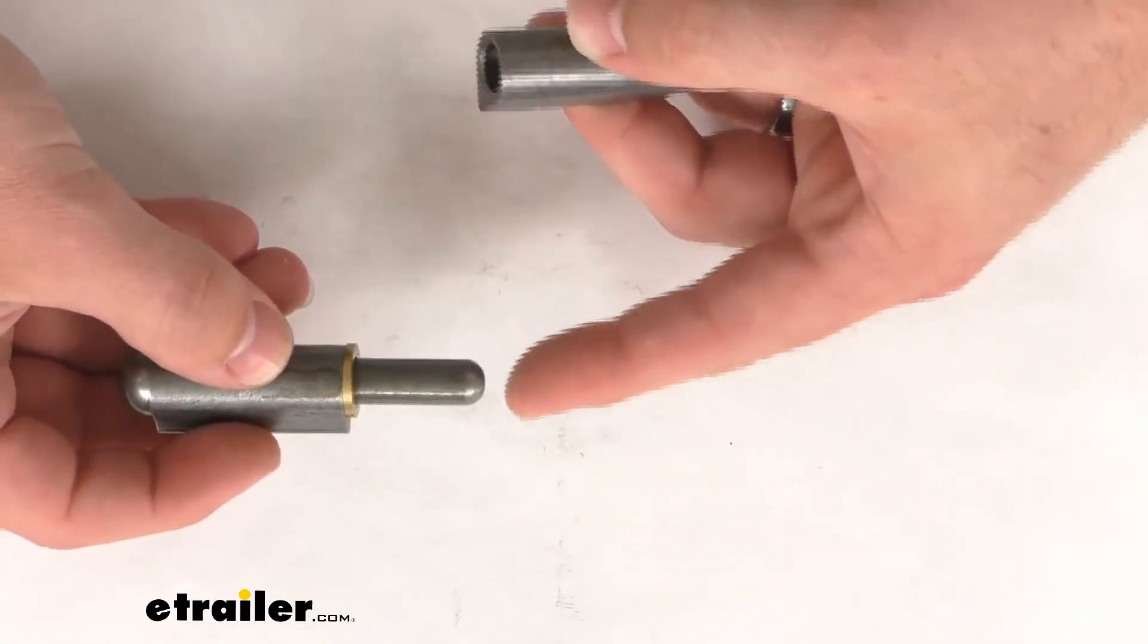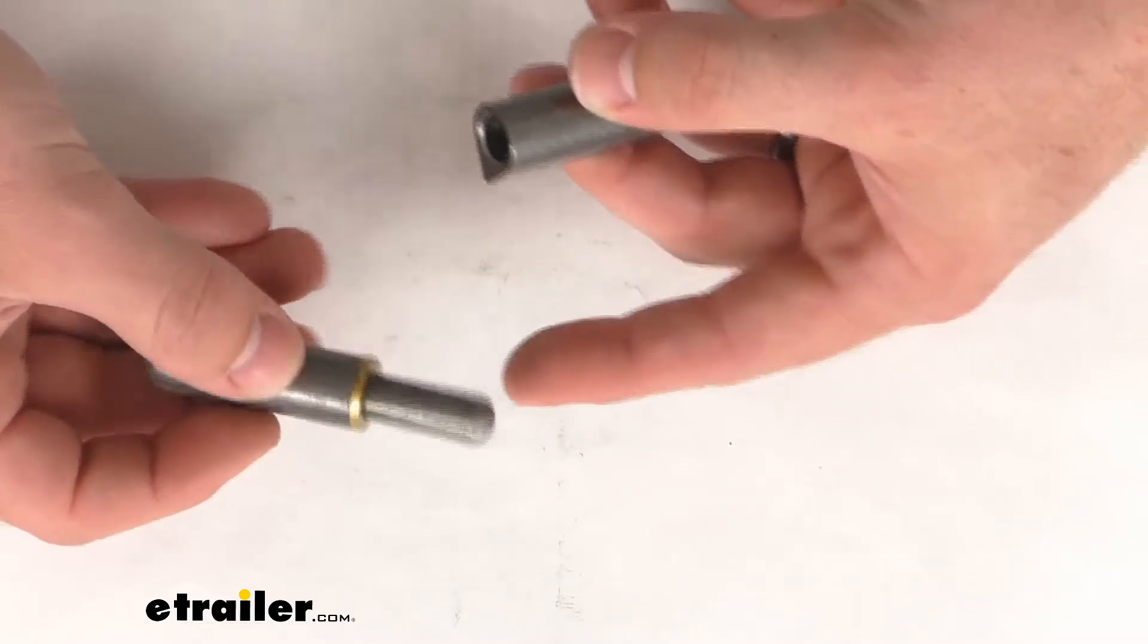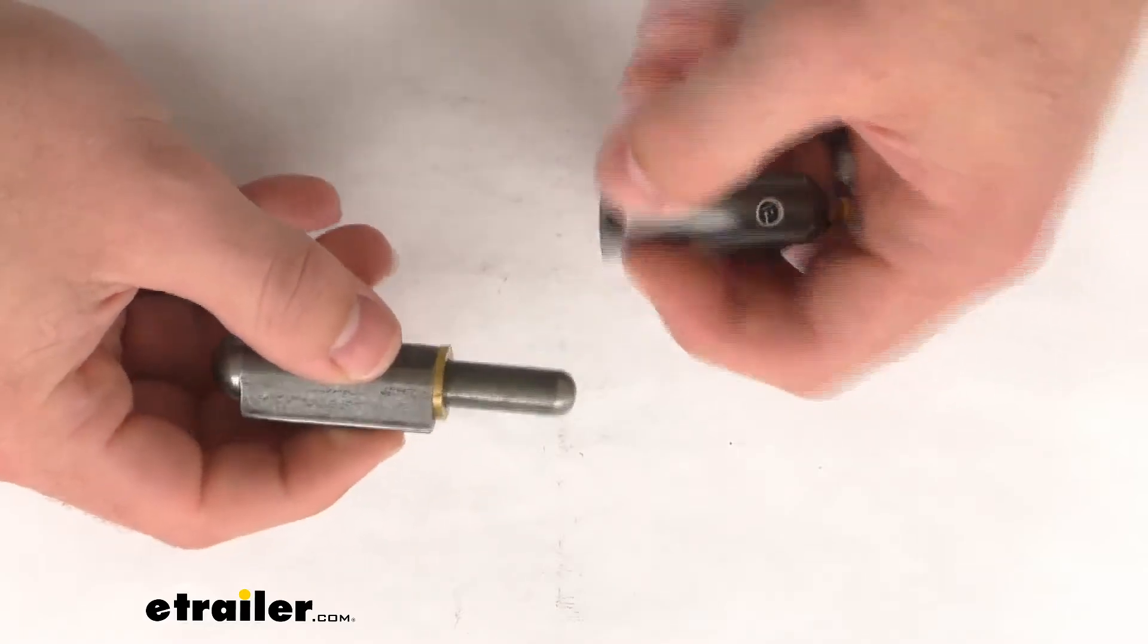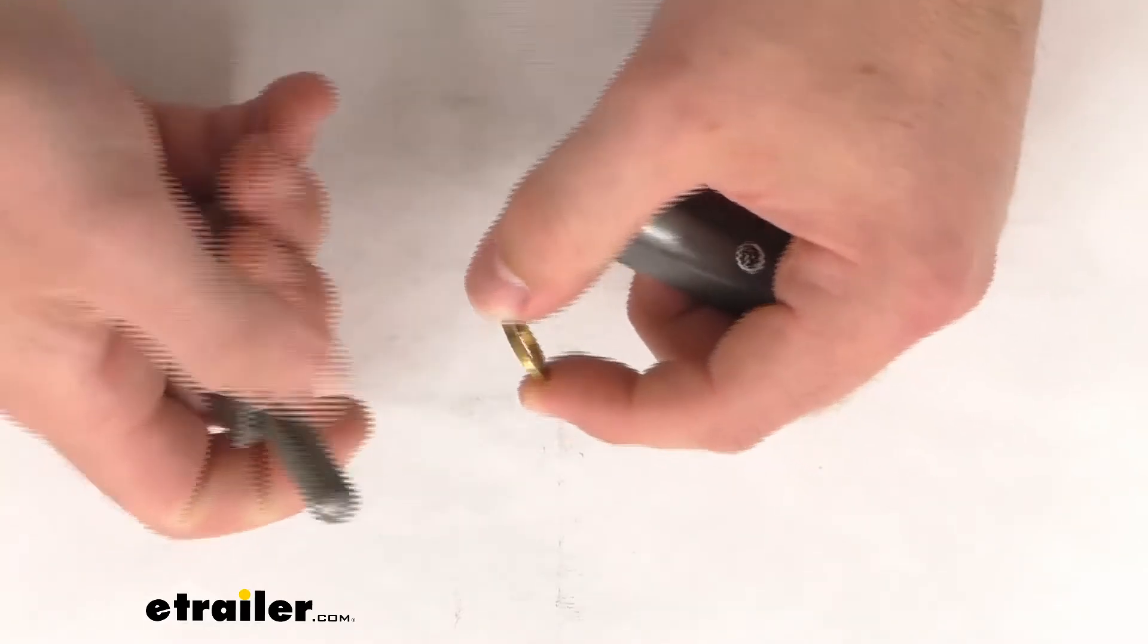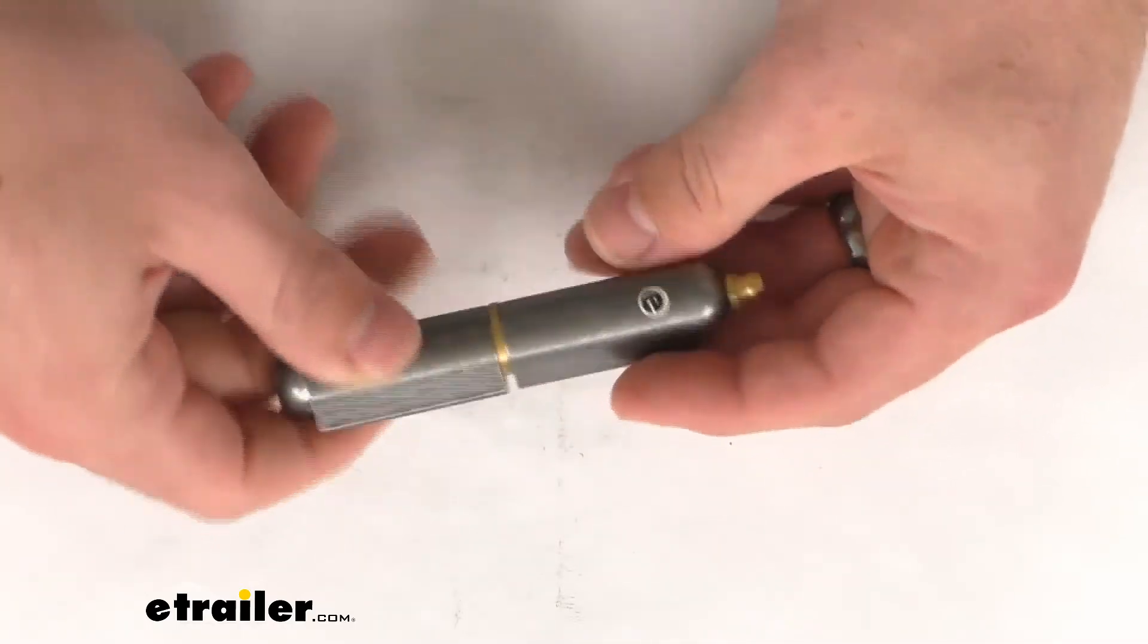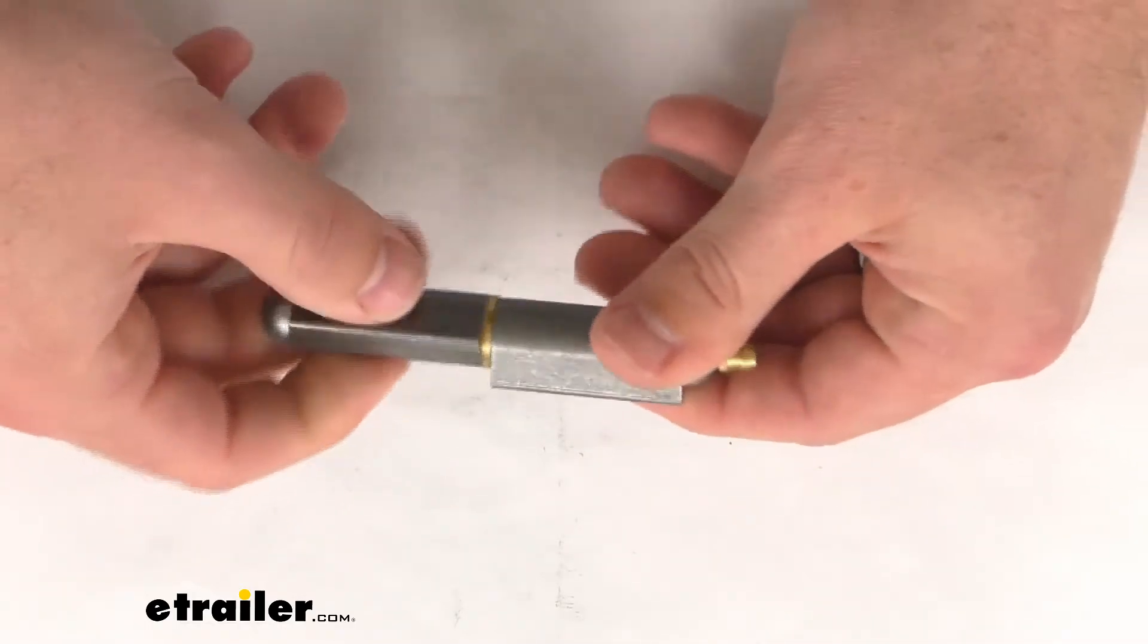Our pin is a five sixteenth inch diameter or about eight millimeter diameter pin. And our bushing is a corrosion resistant brass construction, so it's going to hold up really well for us and ensure that our hinge is going to operate properly.